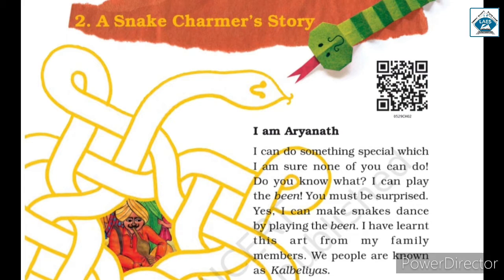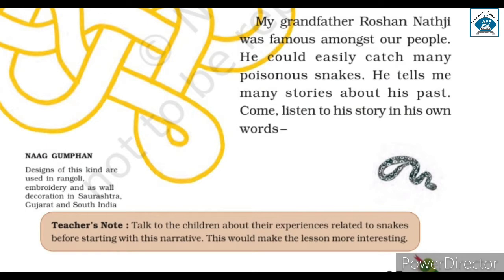We people are known as Kalbelias. My grandfather, Roshanath Ji, was famous among our people. He could easily catch many poisonous snakes. He tells me many stories about his past. Come, listen to his story in his own words.